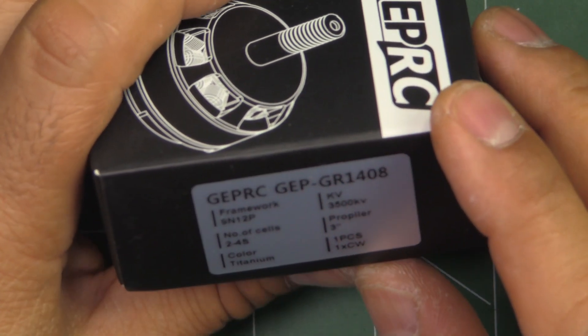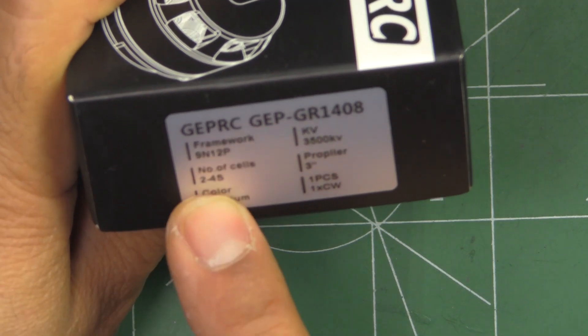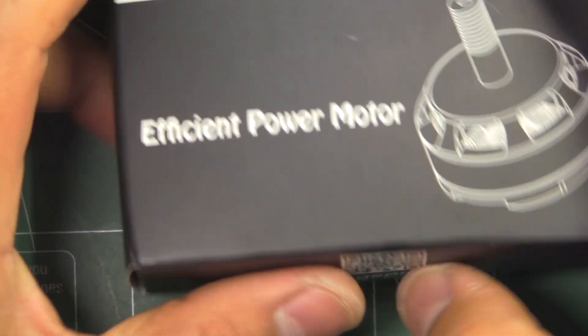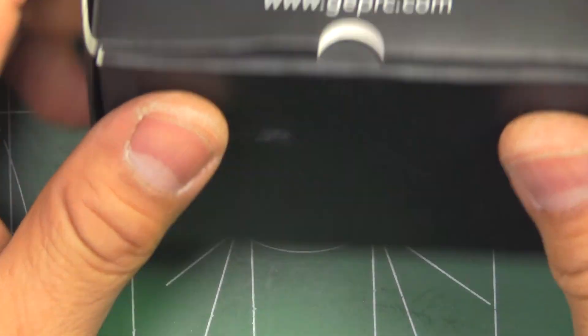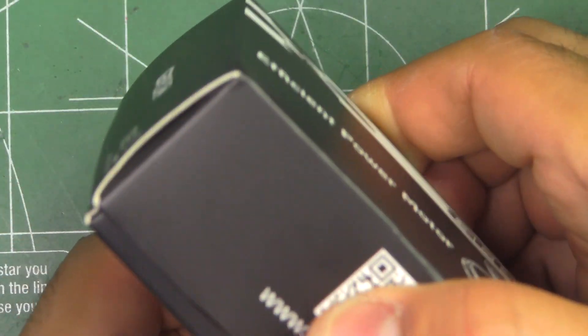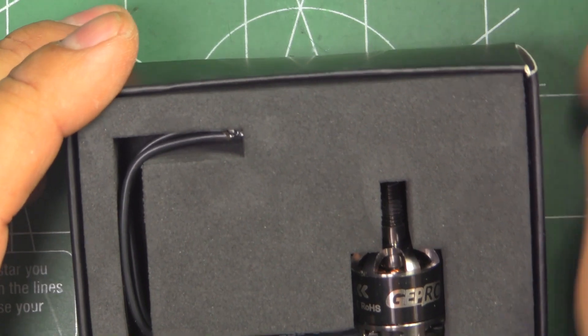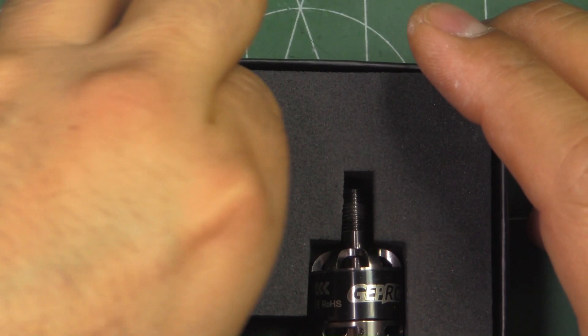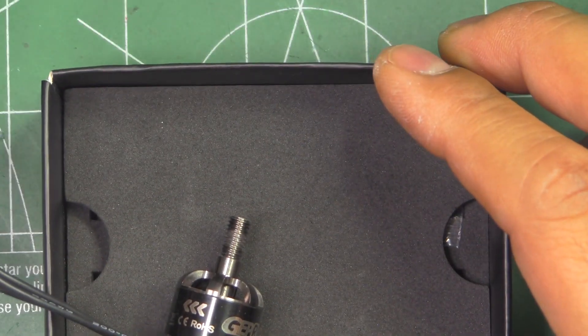So I just got it a couple of days ago so I want to put it through the test and see how it compares. As we can see here it's rated for 2-4s propeller at 3 inches. So GEPRC, I wasn't aware that this company made motors until I saw this 1408. So it comes in this box, kind of fancy I guess. The motor is actually not budget considering the price is about $14.50, almost 15 bucks.